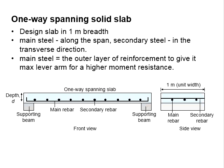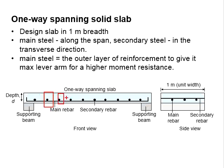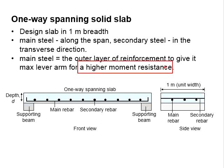The one-way spanning solid slab is normally designed in 1 meter width. The main reinforcement bars are normally placed along the span, while the secondary reinforcement bars are in the transverse direction. The main reinforcement bars are placed at the outer layer of the reinforcement to give a maximum lever arm, so that a higher moment resistance is generated.